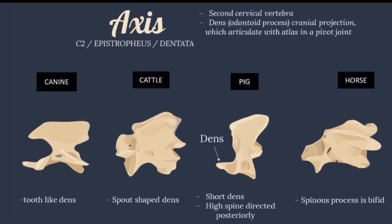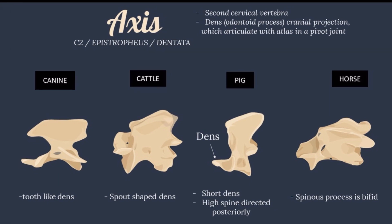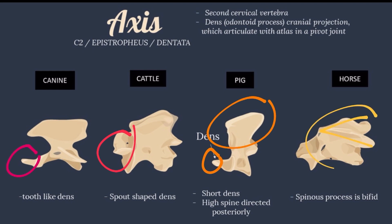The axis is the second cervical vertebra, also called the epistropheus or dentata. The body of the axis features a cranial projection called the dens, or odontoid process, which articulates with the atlas in a pivot joint. Comparing the axis of animals: In the canine, the dens are typically tooth-like. In the cattle, the dens are characteristically spout-shaped. In the pig, the dens are short and have a high spine directed posteriorly. In the horse, the spinous process is bifid.